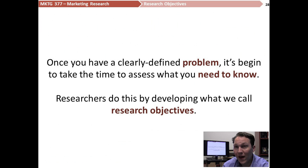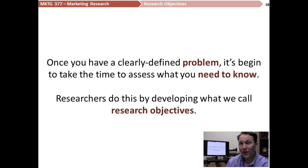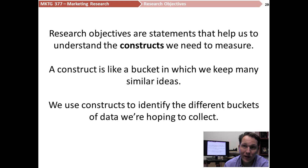Remember that we have an eleven-step process, and step three is actually defining research objectives. First, we need to establish the need for research. Once we've done that, we define our problem. Then we need to start thinking about what it is that we need to know, and that's where we begin developing research objectives that help us understand where our informational deficiencies are. Research objectives are statements that we write up to determine and understand what constructs we need to measure.